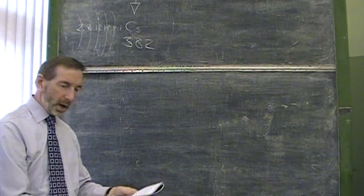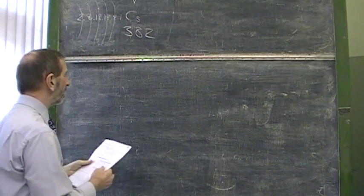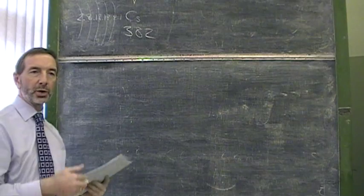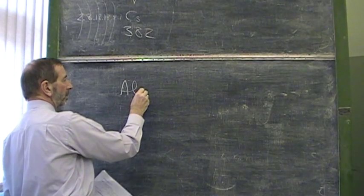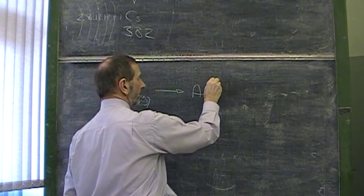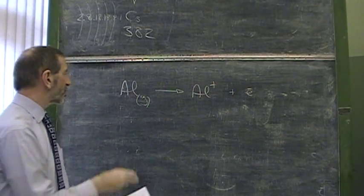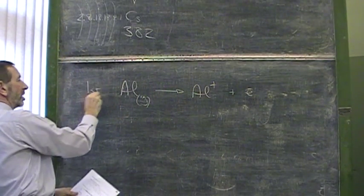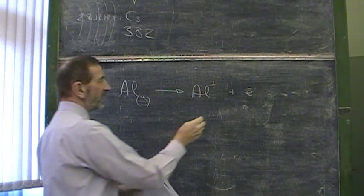Now, what about successive ionization energies? Let's have a look at an example of an element which you could lose one electron after another. A good example would be aluminium. Now, an aluminium atom could lose an electron. There it goes. And according to the data book, the first ionization energy of aluminium is 584.